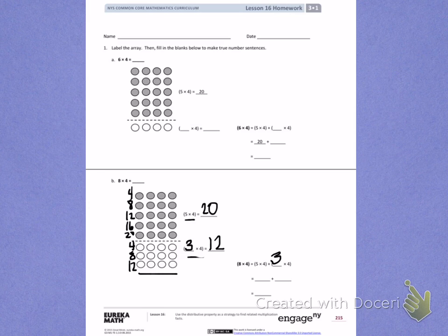Next, I'm multiplying 5 times 4, which was 20, plus the answer to 3 times 4, which was 12.